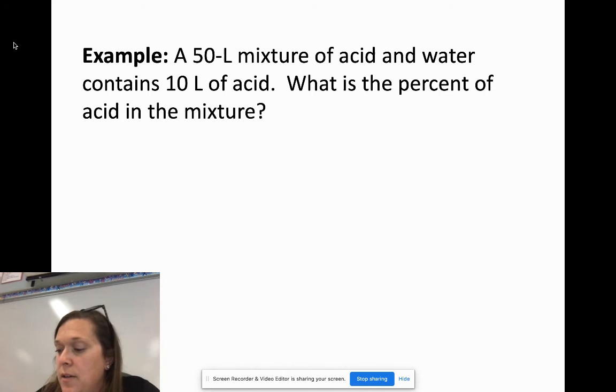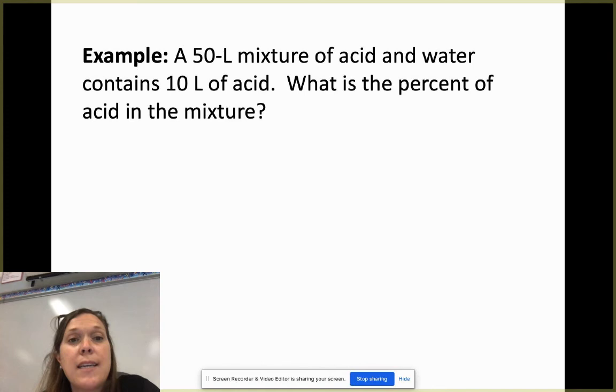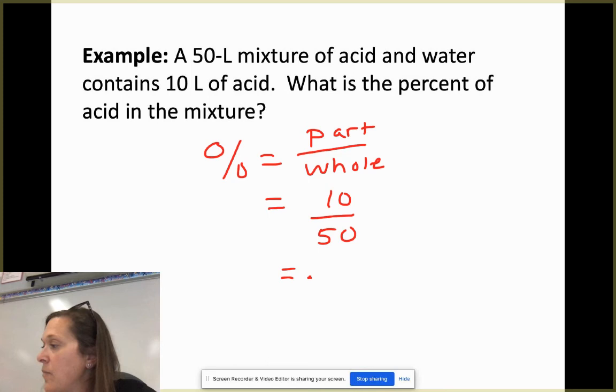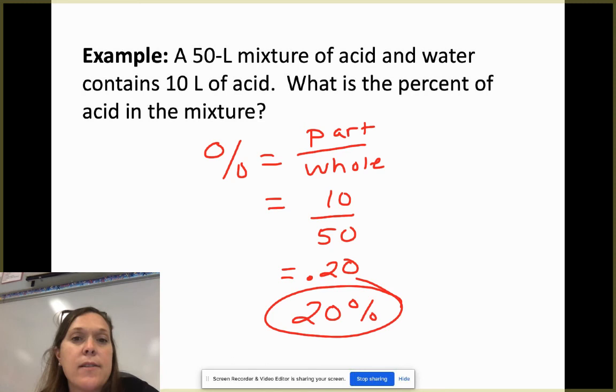So here we have this problem that has a 50 liter mixture of acid and water that contains 10 liters of acid. What is the percent of acid in the mixture? Well, how do we find percent? Percent is equal to your part over your whole. So which is the part? Well, that's 10 liters. What is the whole? That is 50 liters. So when we go to divide that, we get 0.20, which means, what percent would that be? 20% would be our final answer. Pretty easy. These are going to be easy word problems in this section.